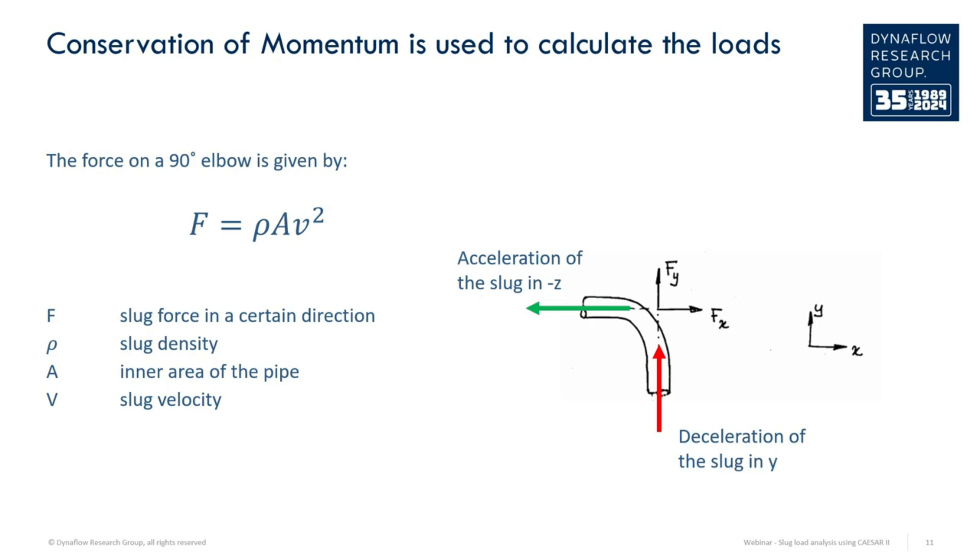Note that since the velocity is squared, an increase in flow rate greatly increases the forces in the model. The second force is due to the acceleration of the slug in the other direction, pushing back on the pipe where it came from.